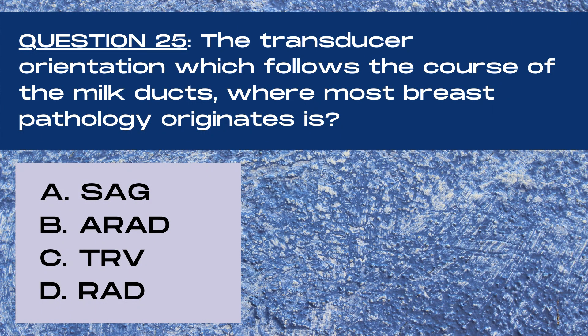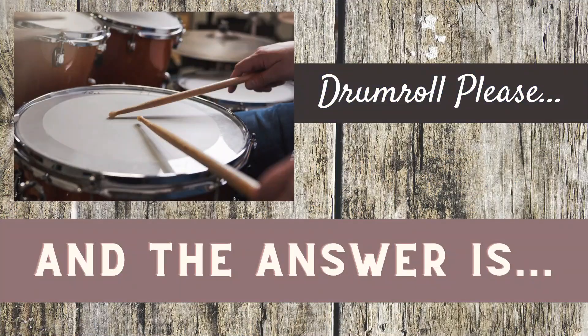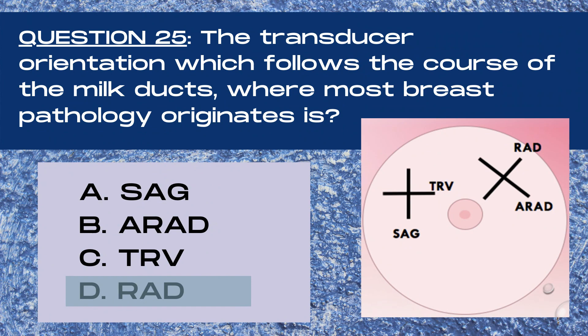Question 25. The transducer orientation which follows the course of the milk ducts where most breast pathology originates is: A sagittal, B antiradial, C transverse, or D radial? The answer is D, radial. The radial imaging plane follows along the path of the milk ducts and provides the most accurate representation of mass shape on ultrasound, because most pathology in the breast is ductal in nature.